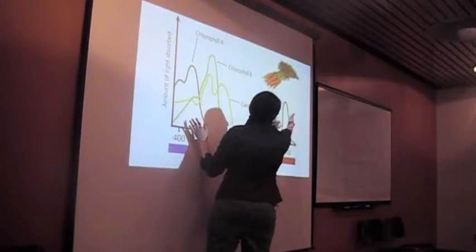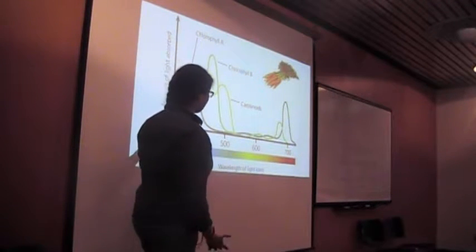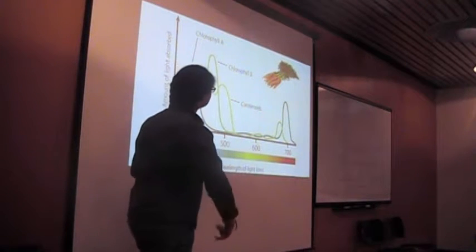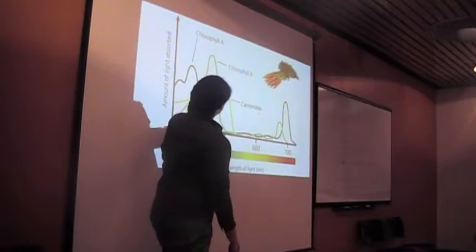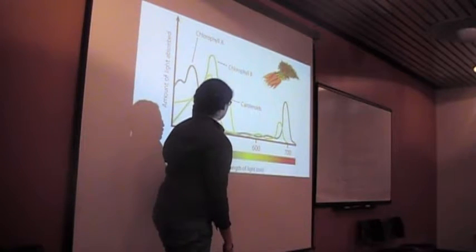as well as in the 700 nanometer range, and that's why this appears green, because it reflects the opposite wavelength that is absorbed. As well as chlorophyll B, that has absorption below 500 nanometers.